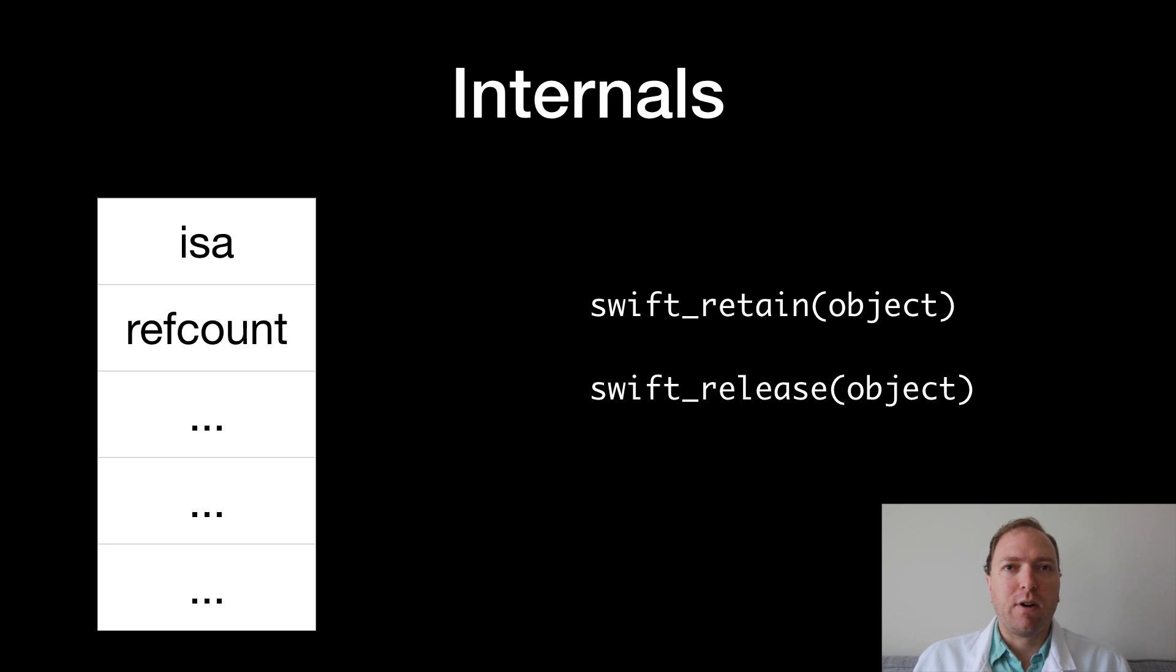The compiler manipulates that reference count by emitting calls into the runtime to the functions swift_retain and swift_release. Retain increments the count and release decrements it. swift_release will also take care of destroying the object once that count drops to zero.